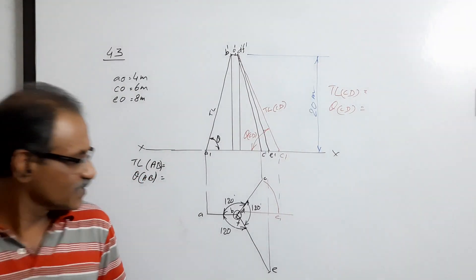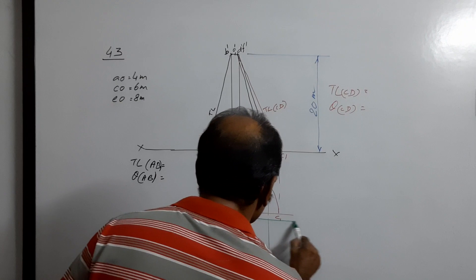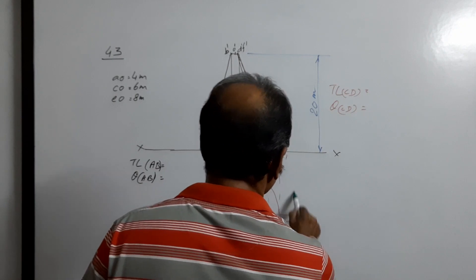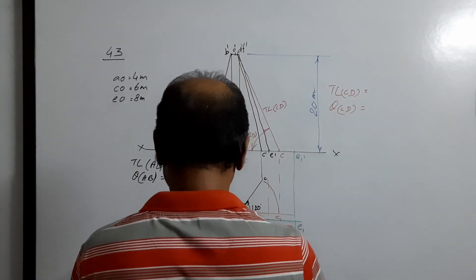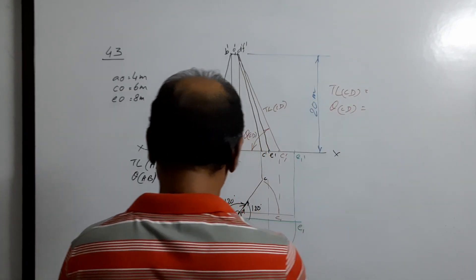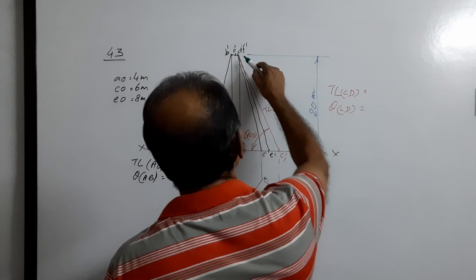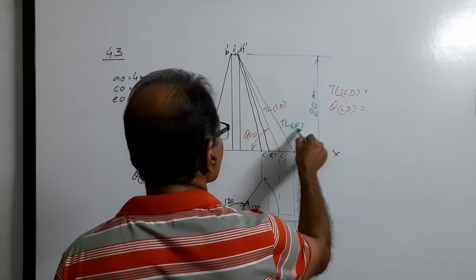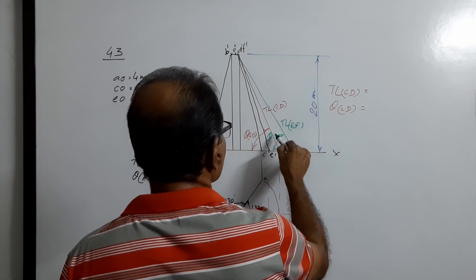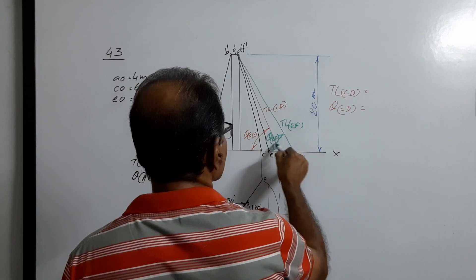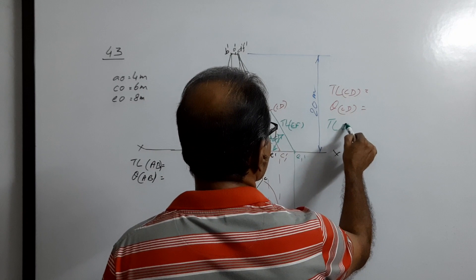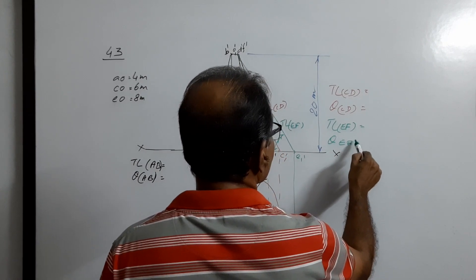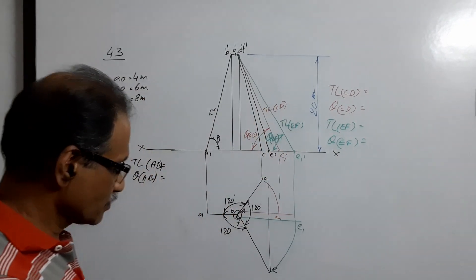Now for wire EF: draw a horizontal line through F. With F as center and FE as radius, draw an arc to get E1, then project E1 up to E1-dash and connect it to D-dash. This is the true length of EF, and this is theta of EF. True length of EF equals so-and-so, theta of EF equals so-and-so — you have got all the answers.